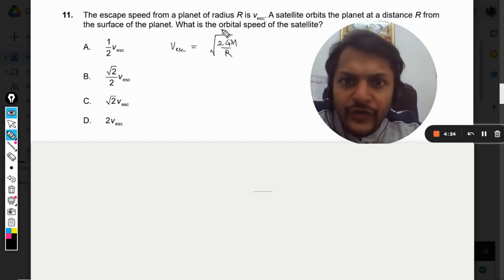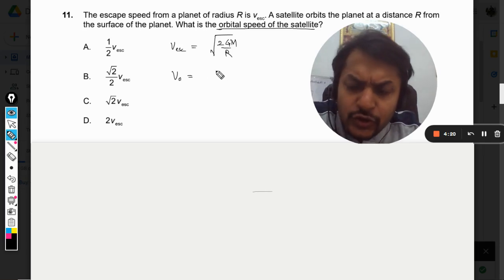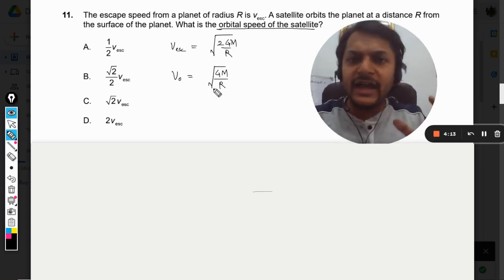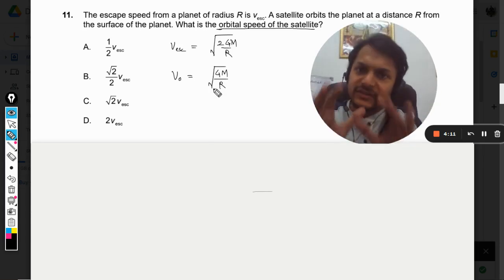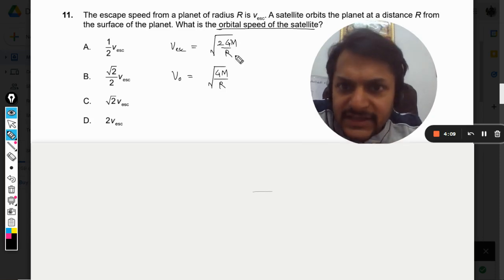We want to find the orbital speed of the satellite, so let us write the formula for that also. The formula for orbital velocity is √(GM/r). I remember these formulas and it is always helpful if you remember this much of the formulas.